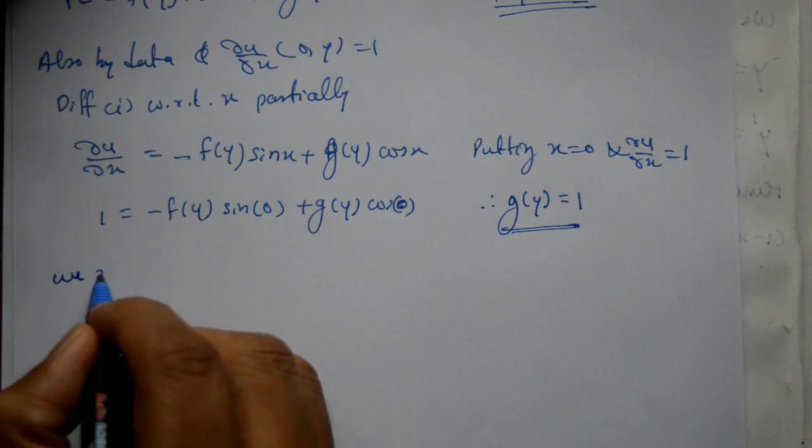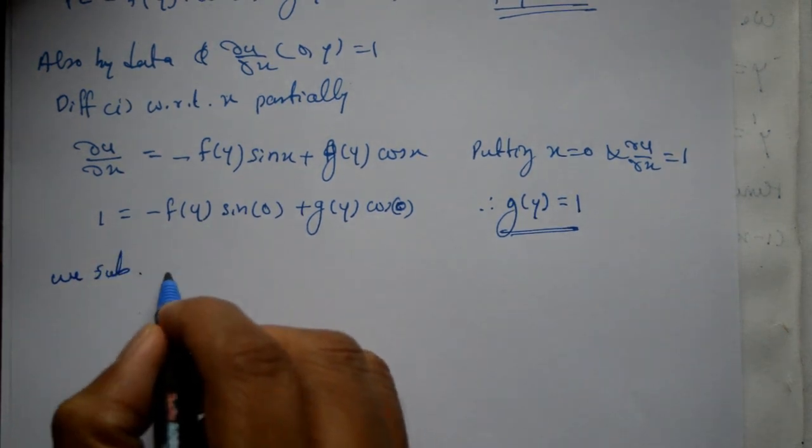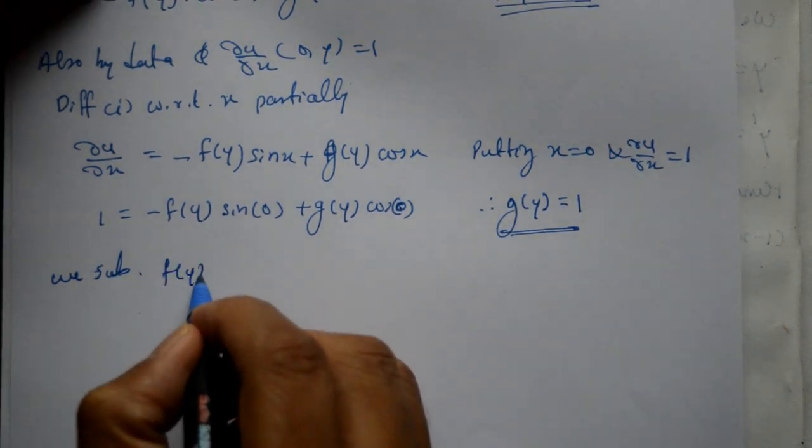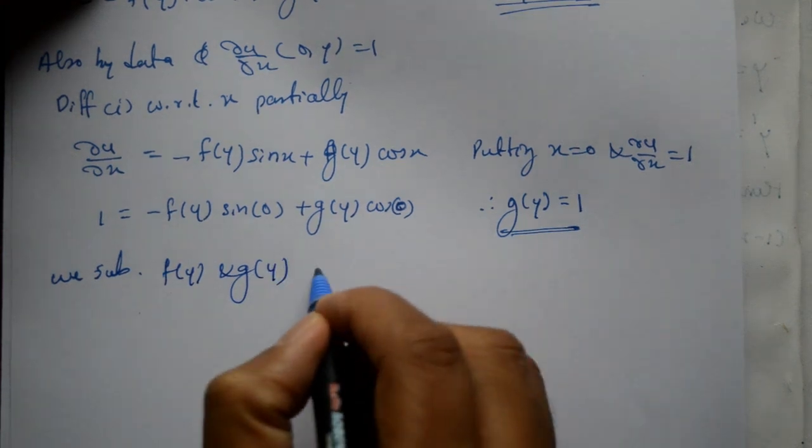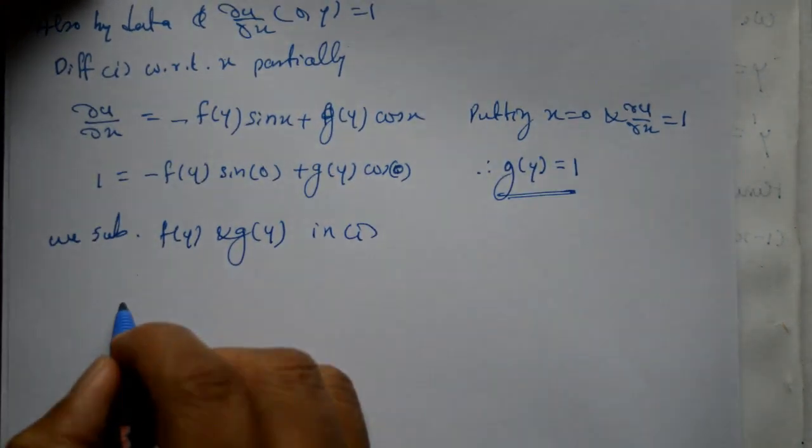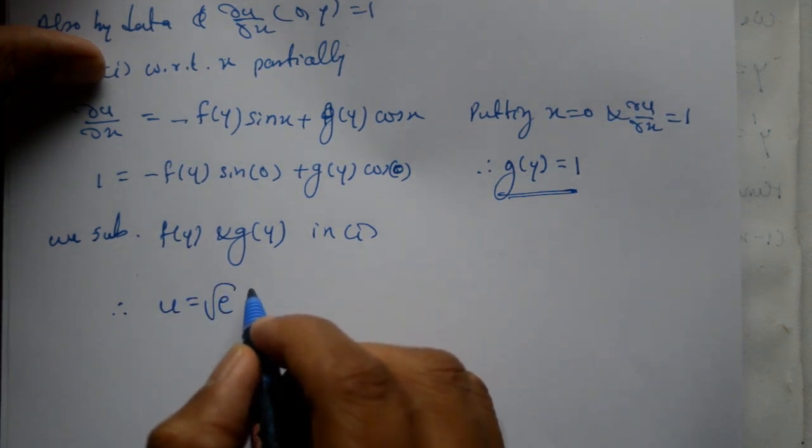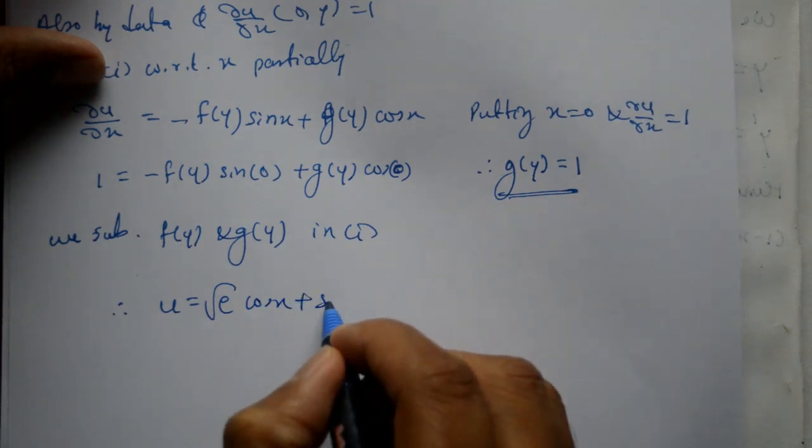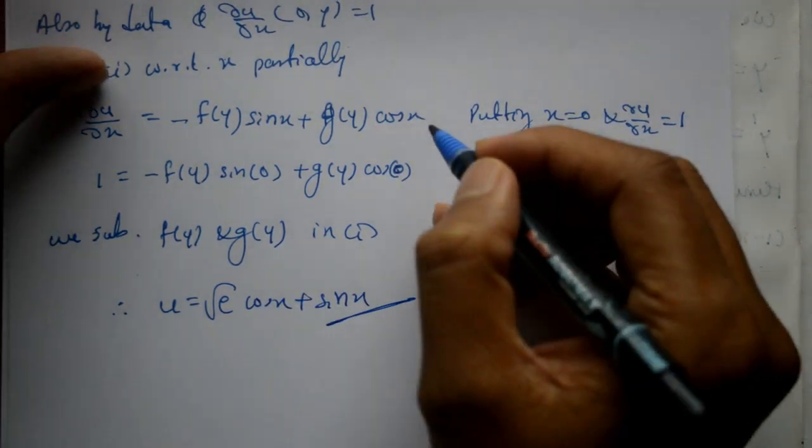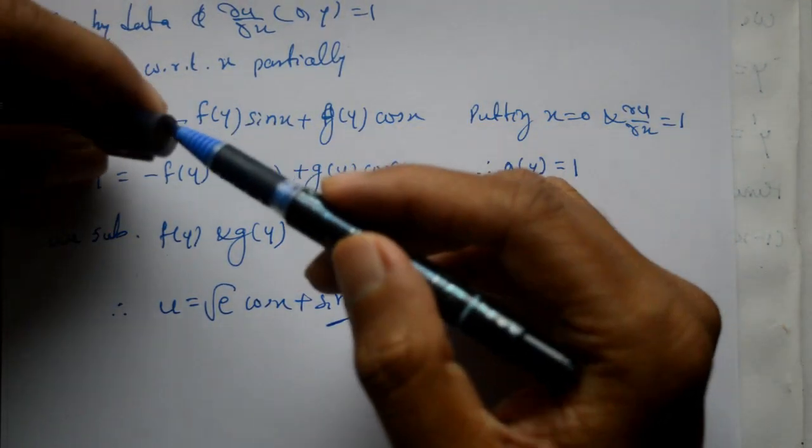Therefore, the equation is u = √e·cos(x) + sin(x). This is the required solution. If you like this video, subscribe, like, comment and share.